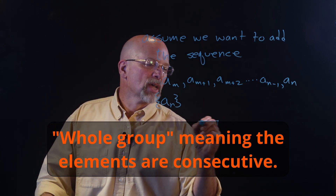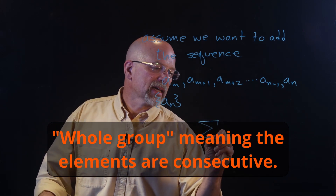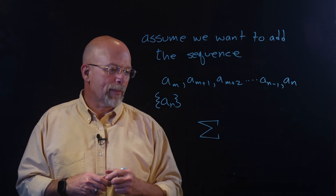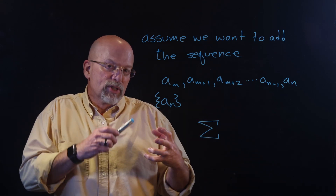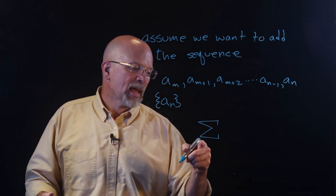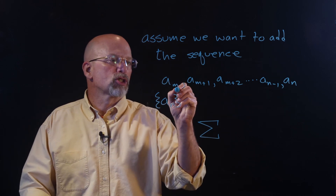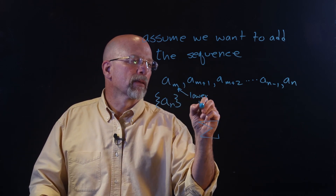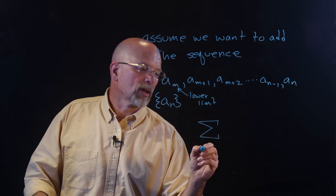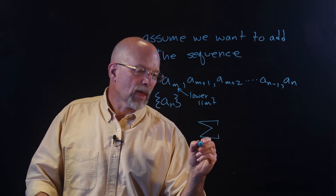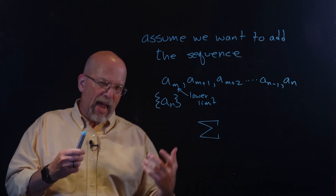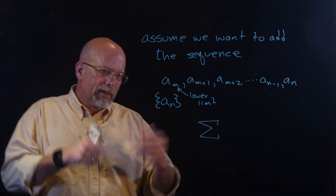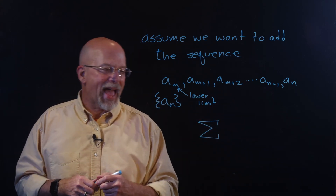The notation we use takes a capital sigma from the Greek alphabet. This capital sigma is going to represent that we're doing a summation. The lower limit, or the start — this is the lower limit, or the starting value — we're going to represent with m. But we need to have some sort of a counter, some sort of an identifier to say which element it is that we are in the process of adding.